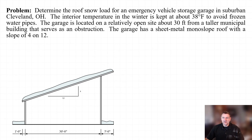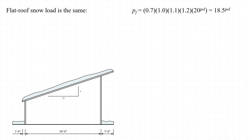Now let's change things up by considering the same garage in Cleveland, Ohio, except that instead of a sheet metal monoslope roof with a 1 on 12 pitch, it now has a 4 on 12 pitch. With a 4 on 12 pitch, we will need to consider a sloped roof snow load, whereas we didn't with the 1 on 12 pitch. Since only the pitch changed, the exposure coefficient, thermal coefficient, importance factor, and ground snow load remain the same, so the flat roof snow load remains 18.5 pounds per square foot.